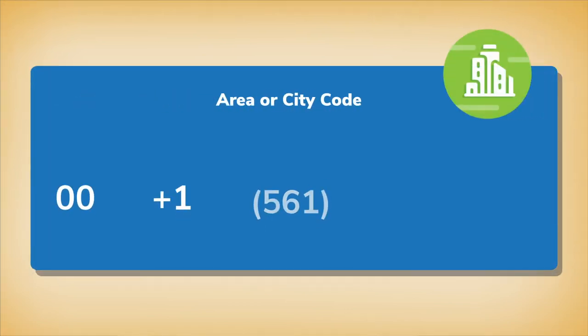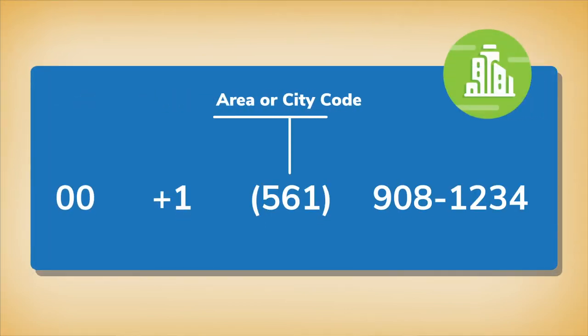Then we have the area or city code for specific cities, which is anywhere from one to three digits. This can also sometimes be a national prefix or a national code for countrywide numbers. This code narrows your call to a smaller geographic area within the international region you're trying to call, and it should be dialed directly following the country code.